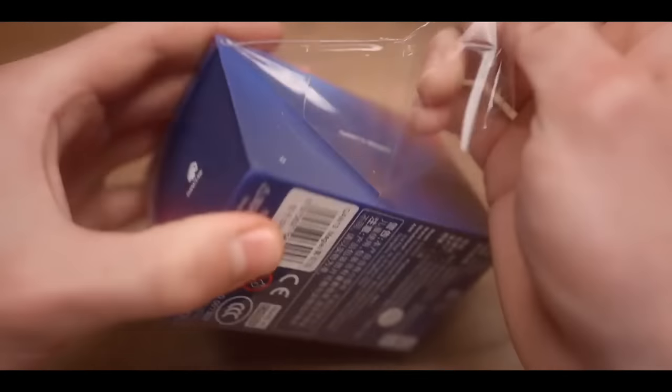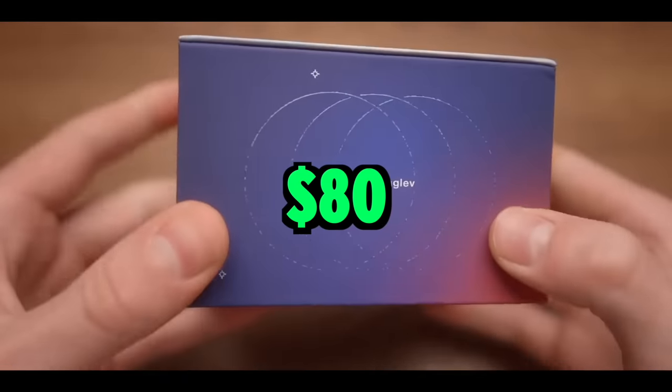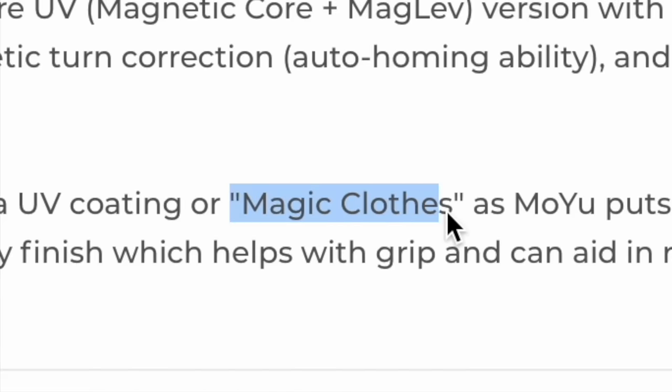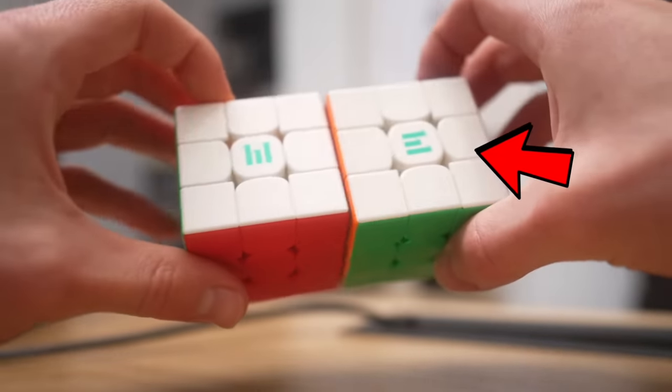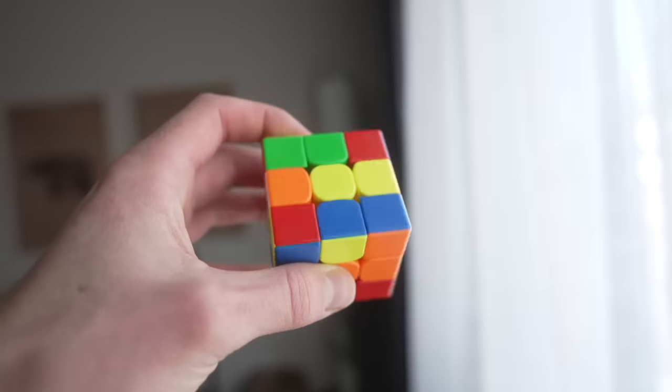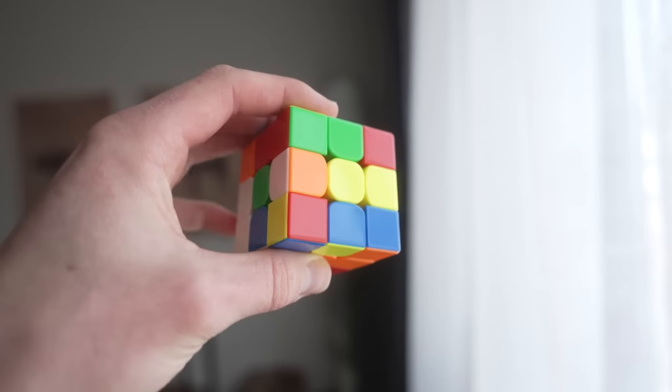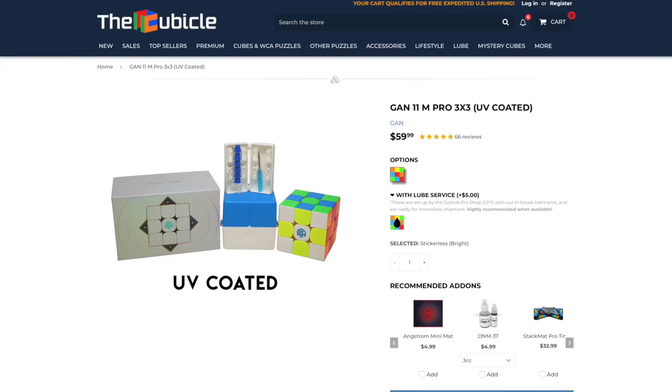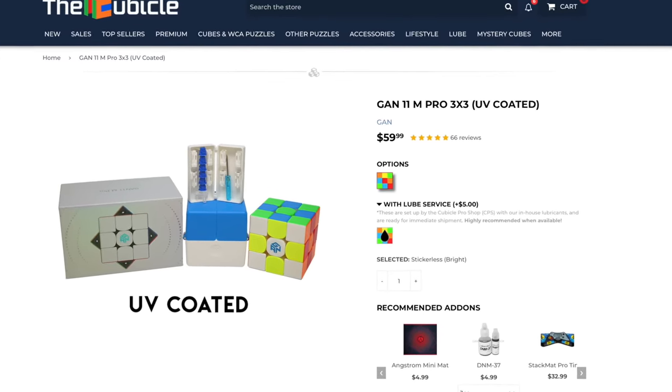$26 for what seems to be Moyu's 2023 flagship cube is a great deal. As comparison, GAN's flagship cube is $80. And even though the Magic Clothes upgrade, which is a glossy more grippy finish of the Ball Core version, is a $10 upgrade, it is still the cheapest UV-coated cube on the market, with the runner-up being a hefty $60 GAN 11M Pro UV.